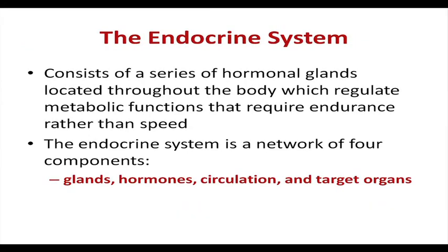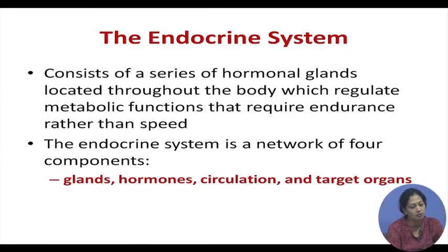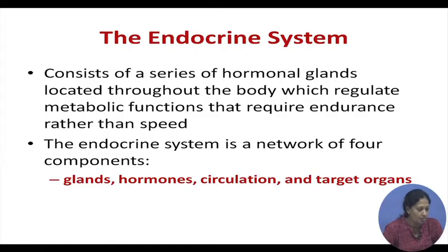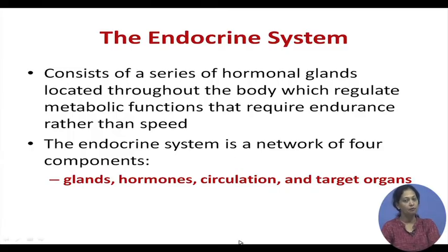What is the endocrine system? The endocrine system consists of a series of hormonal glands located throughout the body which regulate metabolic functions that require endurance rather than speed. The endocrine system is associated with long-term or chronic stress, but it is also related to the immediate response during a stressful situation. It consists of four components: the glands, the hormones, the circulation of those hormones, and the target organs — that is, how hormones reach and affect specific organs.